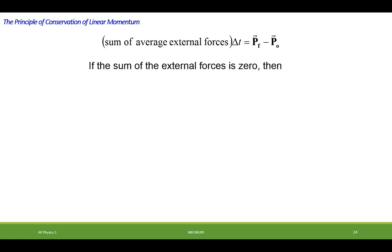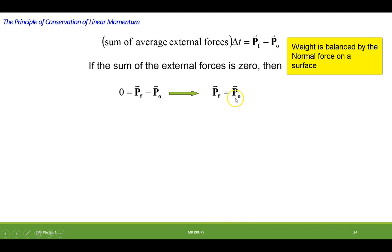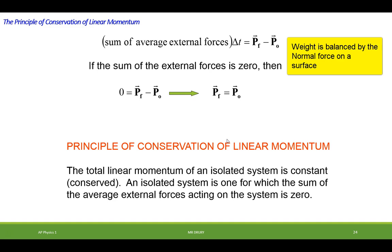If we assume the external forces are zero, and we can disregard friction. We could disregard weight a lot of times because that's acting vertical when the objects are moving horizontally. We can obtain this equation that the final momentum has to equal the initial momentum. And this is what's actually called the principle of conservation of linear momentum. The total linear momentum of isolated system is constant or conserved. An isolated system is one for which the sum of the external forces acting on a system are zero.